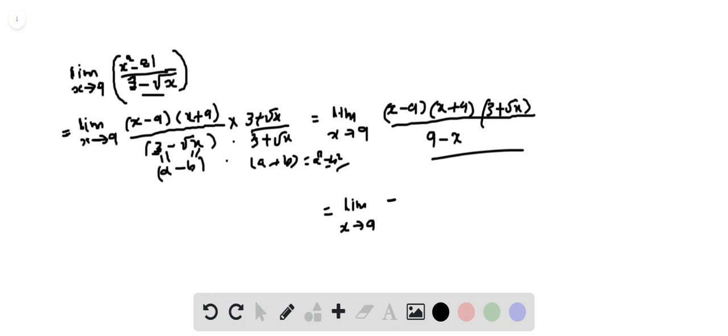So minus x plus 9 into 3 plus root x. Now plug in 9, so minus 9 plus 9 into 3 plus root 9. So if you simplify this you will get minus 108.